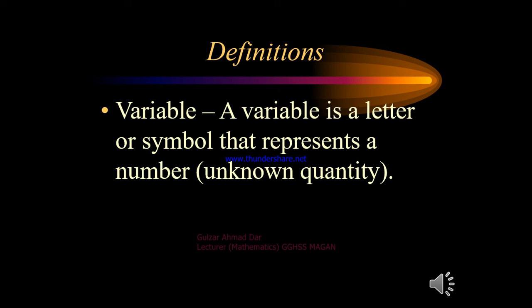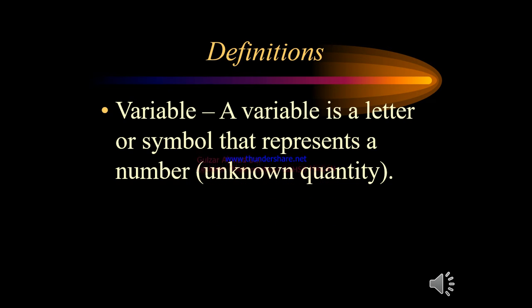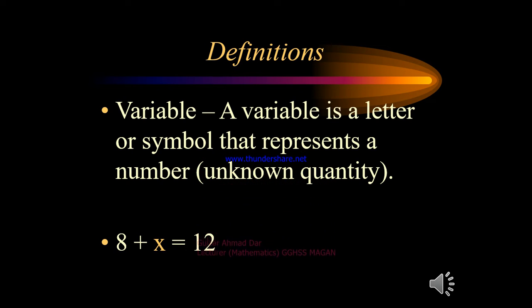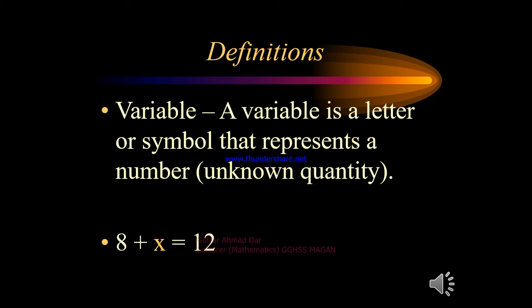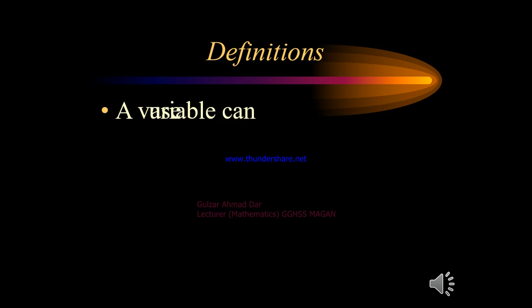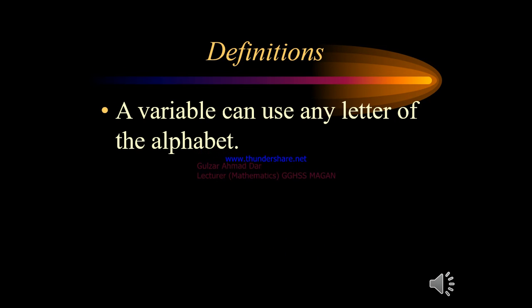A variable is a letter or symbol that represents a number or an unknown quantity. For example, in the expression 8 plus x equals 12, the number 8 and 12 are known numbers, but x can be any unknown number. So x here is an example of a variable.